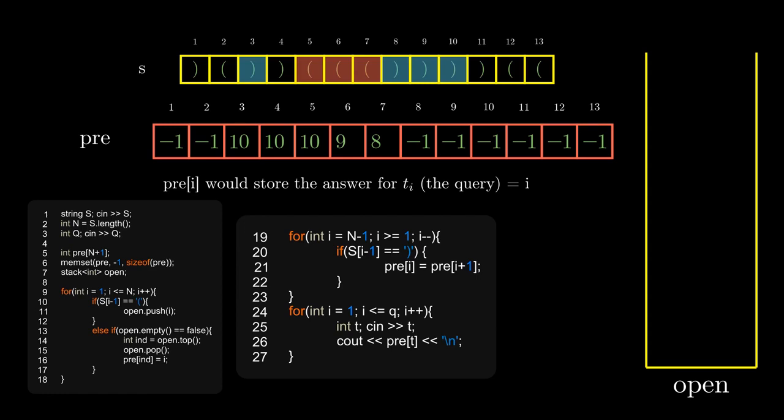Else, if it is a closing bracket and the stack is not empty, then we pop the index of the corresponding opening bracket from the stack and assign pre[index] to i, that is the current closing bracket's index. Now we need to assign pre of each closing bracket's index to pre of the next valid opening bracket's index.